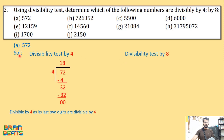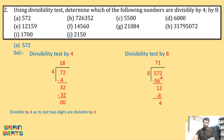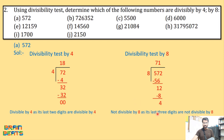Now we check the same number, 572, for divisibility by 8. To check divisibility by 8, we take the last three digits. Since 572 has only three digits, we take the complete number. Dividing 572 by 8 gives quotient 71 but the remainder is not 0 — so it is not completely divided. Therefore, 572 is not divisible by 8, as its last three digits are not divisible by 8.